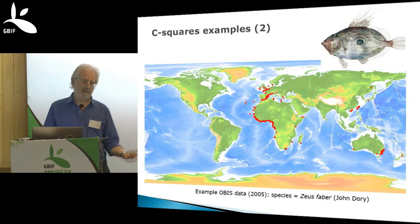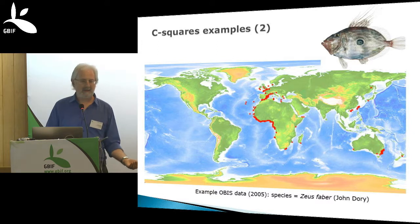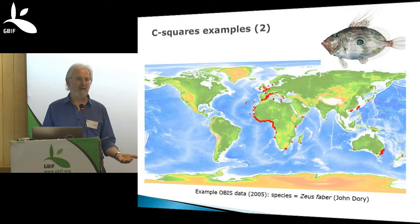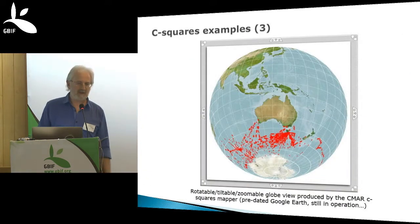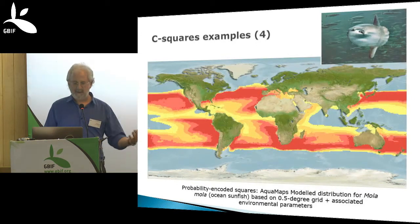For biodiversity you can do something very similar with species point data. This is a very early map we produced for OBIS. We had some data for a fish species, the John Dory (Zeus faber) — a lot of lats and longs in a spreadsheet, basically. For the first time it was easy to send this data across the web to something which would generate a map for you. You didn't have to run any GIS software or know anything about spatial data — you just needed a list of the squares.